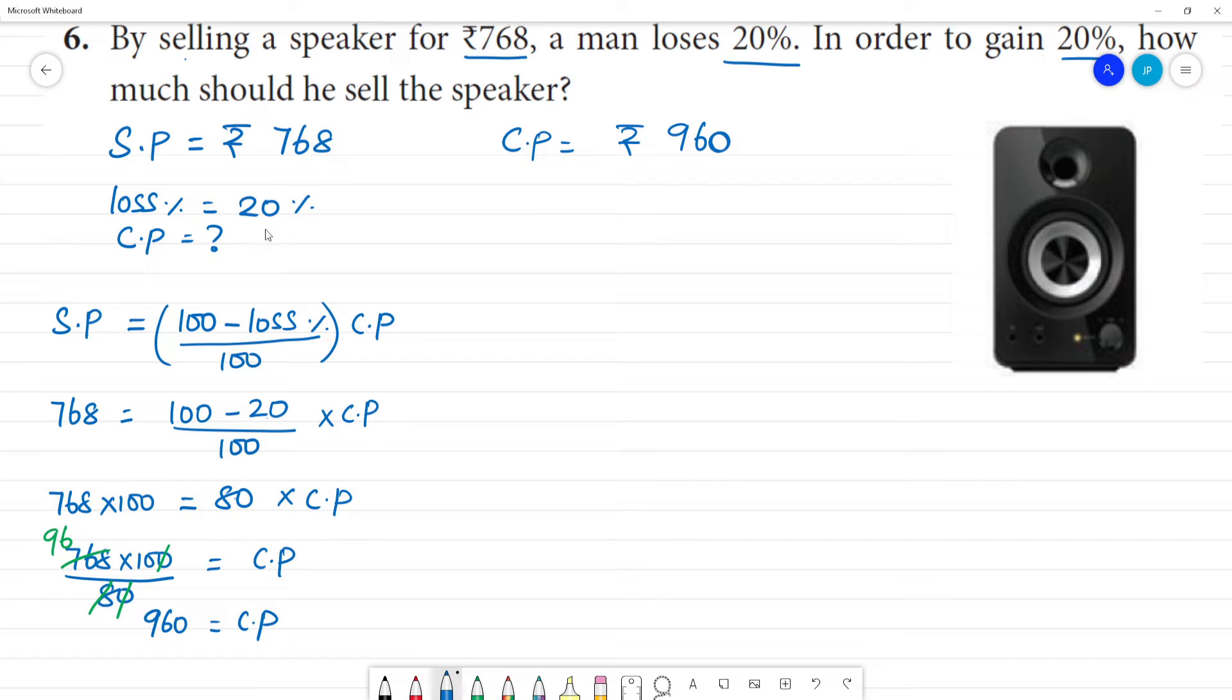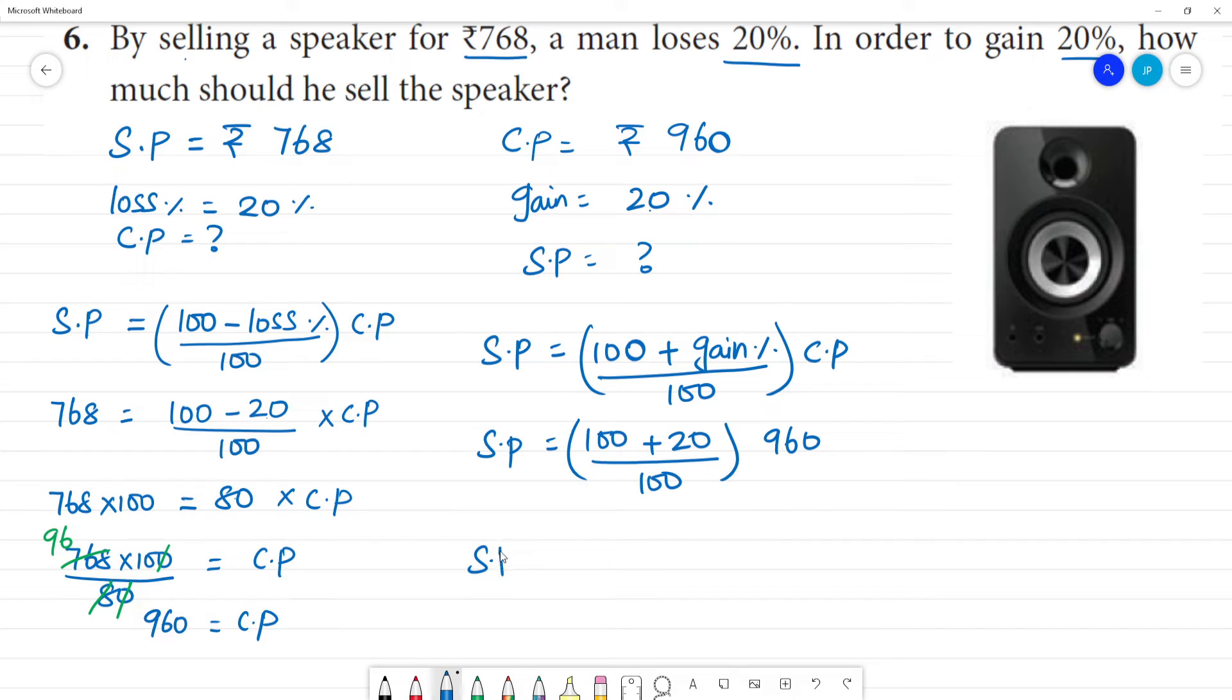768 rupees is equal to 20% loss. Now we have gain, profit, gain 20%. So, value is equal to CP. Value is equal to 100. SP is equal to 100 plus this gain 20 by 100. If we know cost price, that is equal to 960.